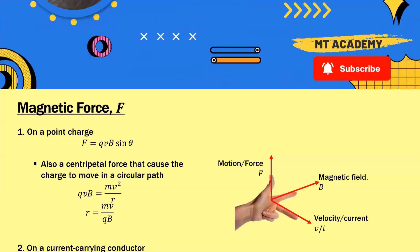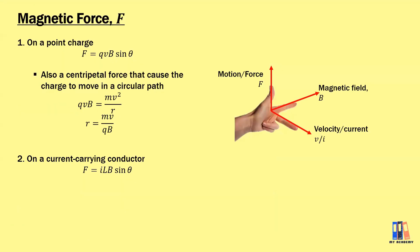Let's start with the concept of the magnetic force. The magnetic force on a point charge is QVB sin theta, where the angle is between the magnetic field and the velocity. The magnetic force is also a centripetal force that causes the charge to move in a circular path. The basic concept is that the magnetic force QVB equals the centripetal force mv squared over r, from which we can obtain the radius of the circular path.